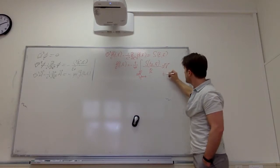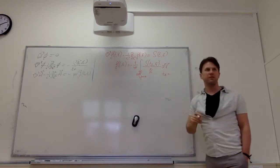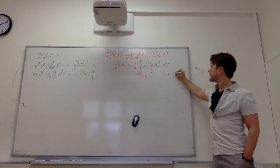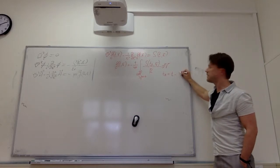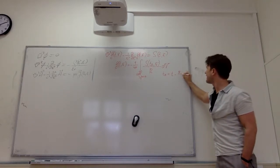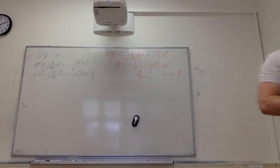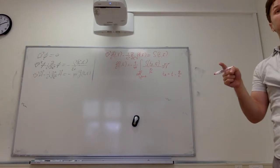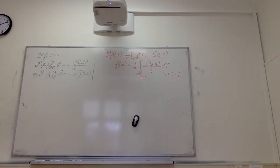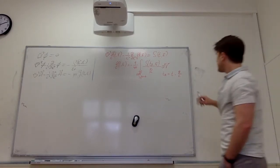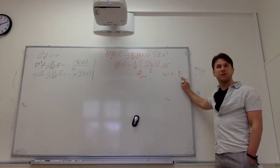The retarded time was defined as T minus R over c, where R is big R. This makes perfect sense from a physical perspective — because we had already proved that electromagnetism propagates at the speed of light.